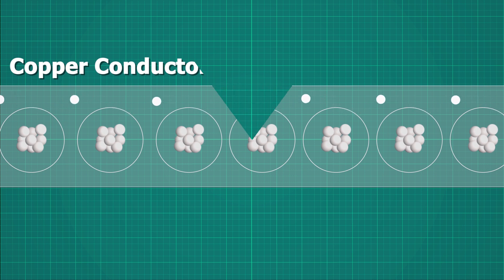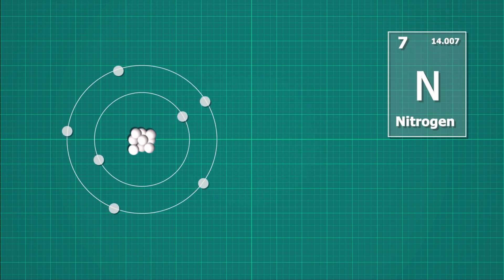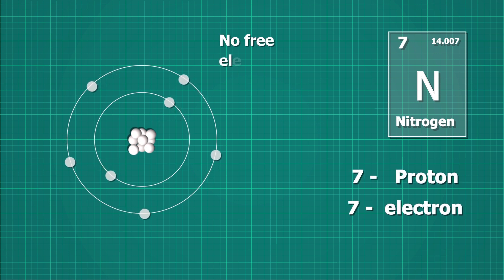Let's take another case of nitrogen atom. Nitrogen has atomic number seven, that is it has seven protons and seven electrons. It does not have any free electrons to move as all the electrons are tightly bonded to nucleus by electrostatic force.